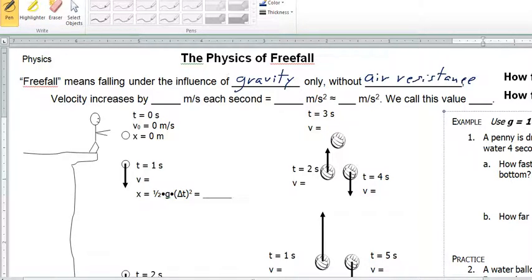So in this case, velocity increases by 9.81 meters per second each second. So we can write that as 9.81 meters per second squared.